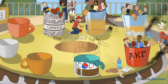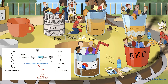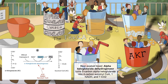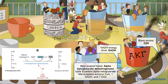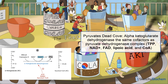In step 4, 5-carbon alpha-ketoglutarate is transformed into 4-carbon succinyl-CoA via alpha-ketoglutarate dehydrogenase. You'll notice a wet towel on the floor next to some spilled cheap beer, which represents alpha-ketoglutarate dehydrogenase. This oxidative decarboxylation reaction produces 1 NADH and 1 carbon dioxide, again represented with the NADH drink and black smoke. Alpha-ketoglutarate dehydrogenase uses TPP, NAD+, FAD, lipoic acid, and CoA as cofactors, just like pyruvate dehydrogenase.